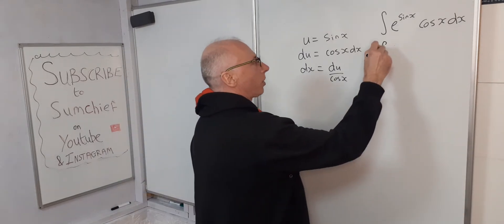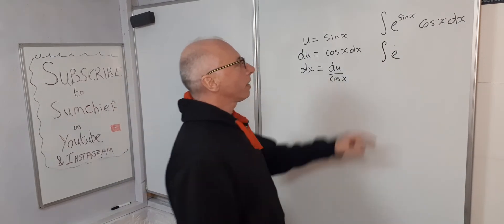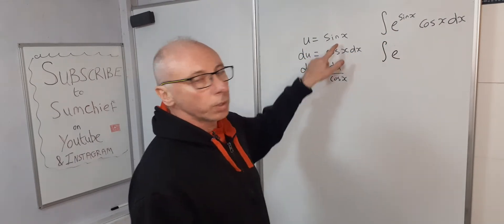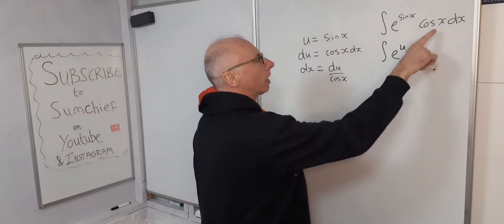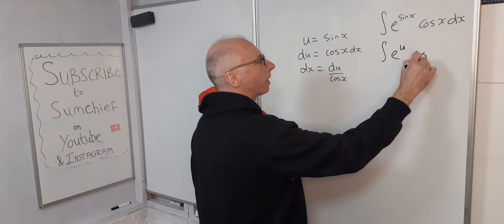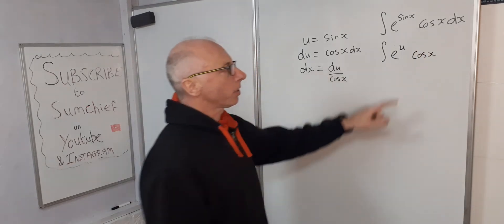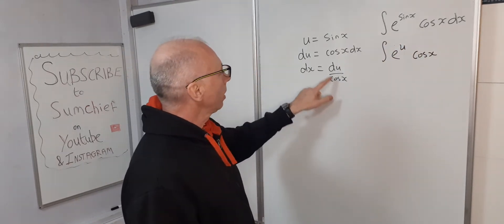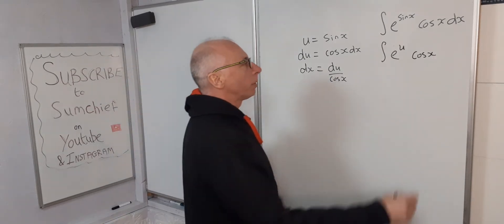So first step, e stays, sine of x - that's u so e to the power of u. Cosine x just allow me to leave that in for now. I know it's not invited into the u world, but you'll see when we put the dx in good things are going to happen.